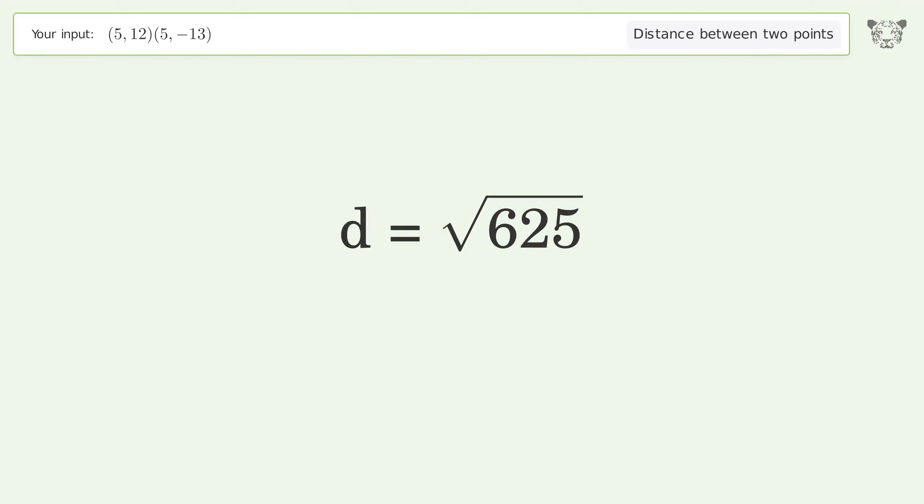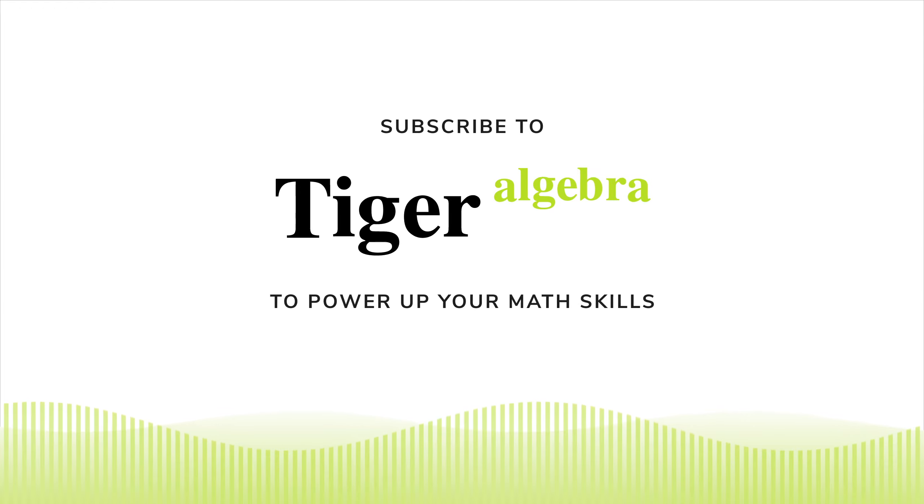And so the distance between the two points is the square root of 625.